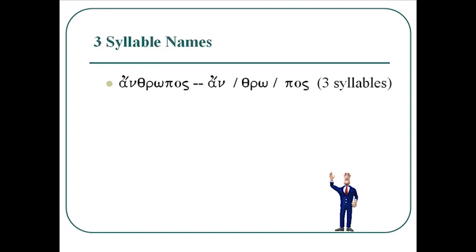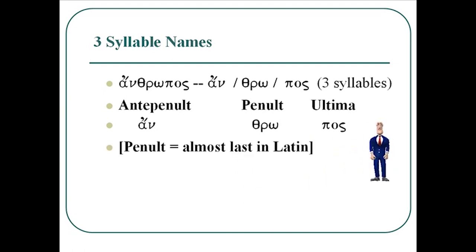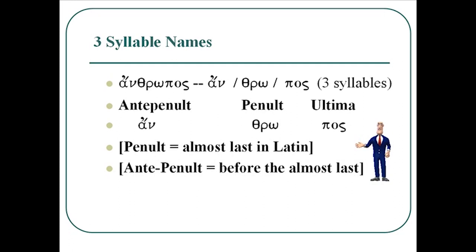Now that we've got how to split up the syllables, in Greek the last three syllables of a word are named. For example, anthropos has three syllables. The last syllable is the ultima — pos. The second from the last syllable is called the penult — thro. And the one that comes before the penult is called the antepenult — an. We'll need to know these names because the accents will fall on these last three syllables.